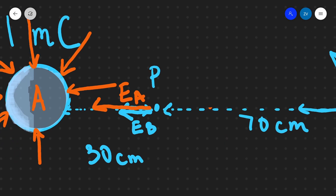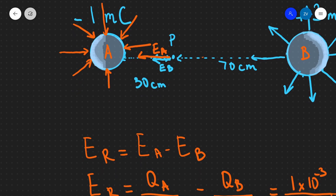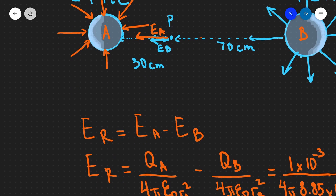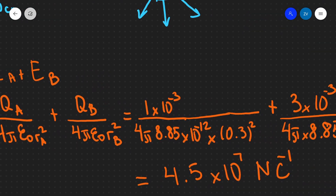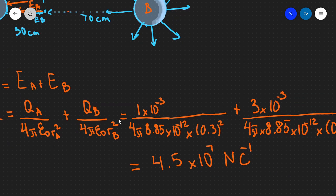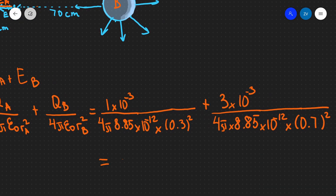This means that now, in order to find the resultant electric field, I need to not take them away as we did before, but I need to add them. So this minus sign turns into a plus sign throughout the expression. Notice that everything else remains unchanged — the distances remain unchanged and the size of the charges remain unchanged; it's only the sign which is altered. If we put this into a scientific calculator, we get 1.5 × 10⁸ newtons per coulomb.